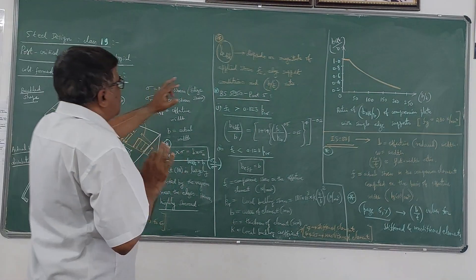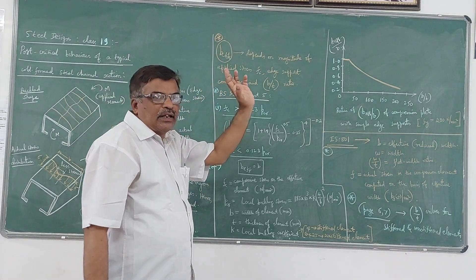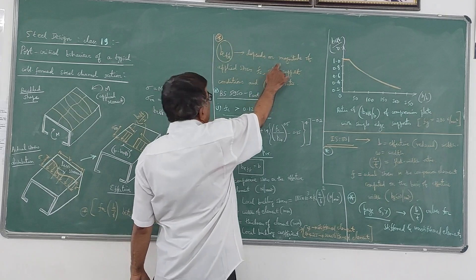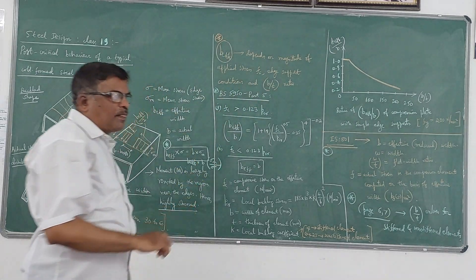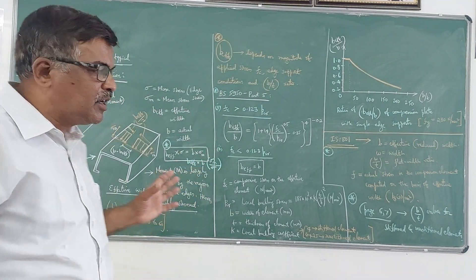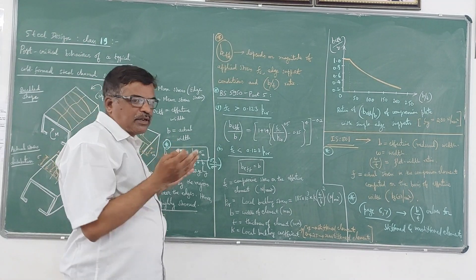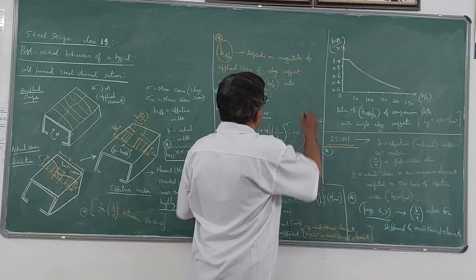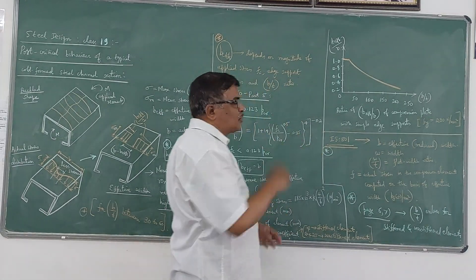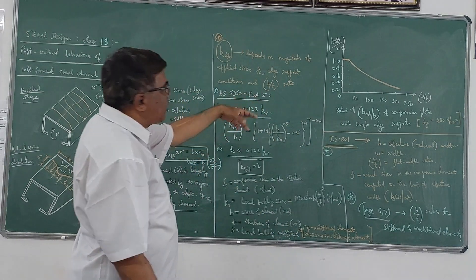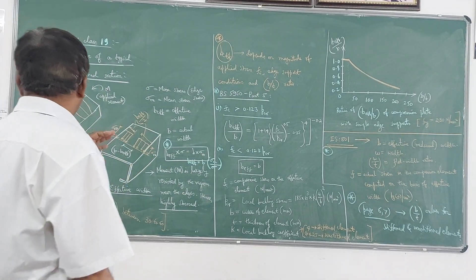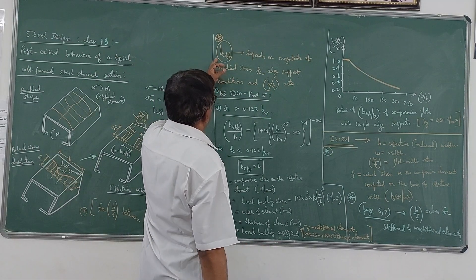Now this effective width depends on so many parameters. It depends on the magnitude of the applied stress Fc - so applied stress is nothing but the force we are going to apply divided by the cross-sectional area Fc. And it depends on the end support also, end support condition also, and also this B/T ratio, that is width to thickness ratio. These are the three parameters on which this B_effective depends.